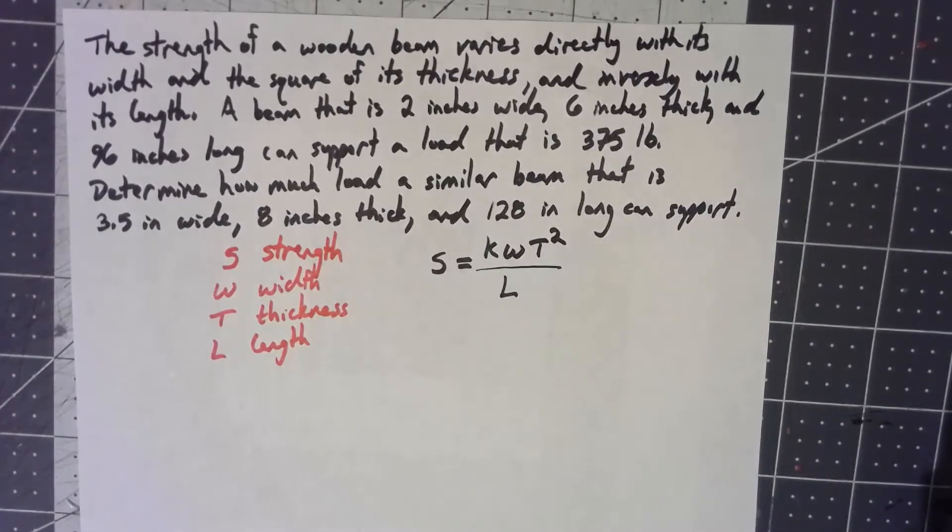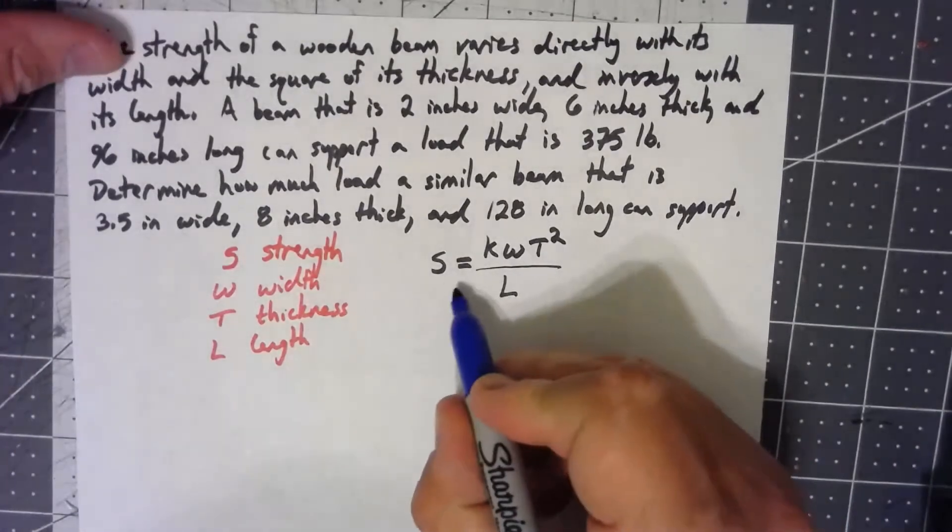I've got a more complicated equation. I've got more variables in there. But I still attack it the same way. I first want to figure out what that K is, then once I know what K is, then I can use it to figure out what I need in the end. So what can I do to figure out K?